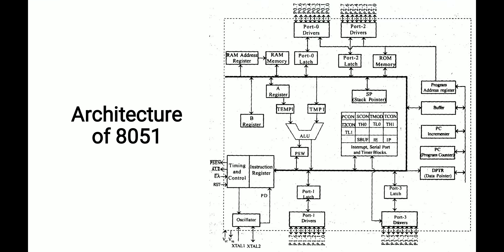This diagram shows the architecture of the 8051 microcontroller. There is port 2, port 1, port 0, and port 3, with drivers and latches present for each port. Then RAM address register, RAM memory, register A, register B, timing and control unit, instruction register, program address register, buffer, PC incrementer, program counter, DPTR, PCON register, SCON register, and TMOD register — these are the special function registers. Then SP (stack pointer), ROM memory, RAM memory, and oscillator. These are all the components of the architecture of the 8051 microcontroller.